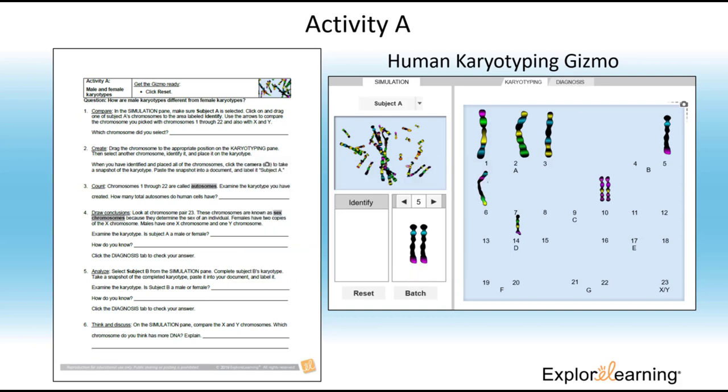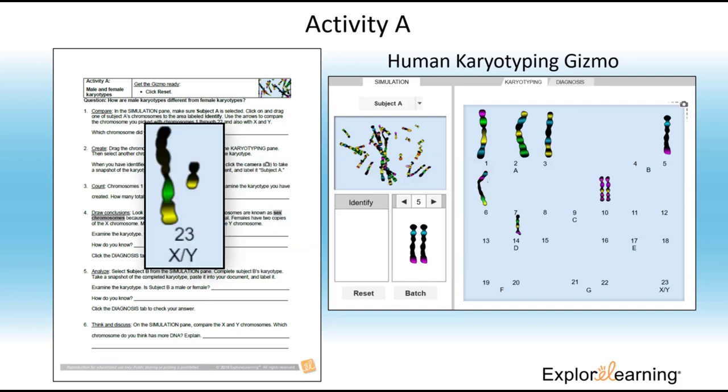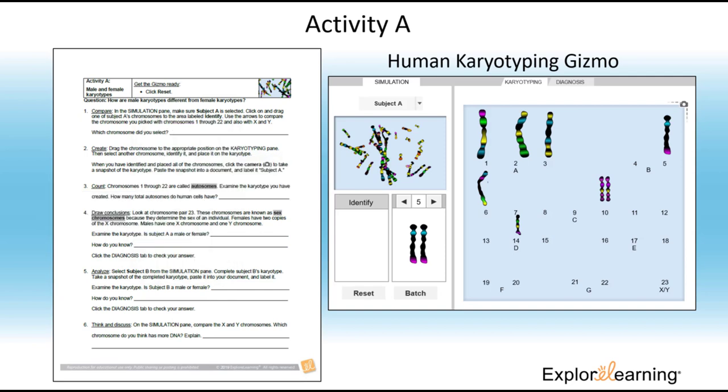The last question of the activity shows that at the genetic level the X and Y chromosomes are different and in fact the X chromosome has more DNA because it is larger than the Y chromosome. The students have to write a short paragraph about their discovery and the reasoning behind it.